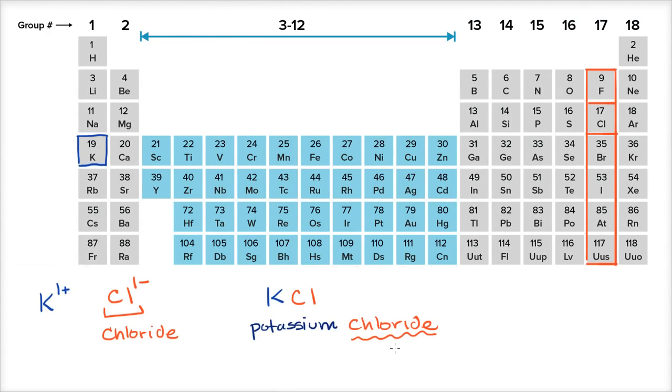So if this one over here is one minus, then you know this over here, since they're one for one, this is going to be one plus. So you know that you're dealing with a potassium cation, and a chloride ion, or a chlorine anion.